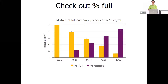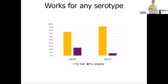To pressure-test the percent full metric, we took full and empty stocks at 2×10¹³ CP/mL and titrated them into each other. Where we have a 100% full stock, Stunner agrees and confirms 100% full. Titrating across to 80%, 60%, and 40% full, Stunner agrees with what we expect based on how we've mixed the samples. This translates easily between any serotype — we can run two different serotypes on the same plate by simply telling Stunner which samples are, say, AAV5 and which are AAV9, so it analyzes the UV-Vis and DLS signal differently for each.